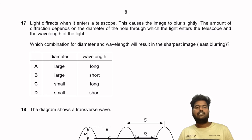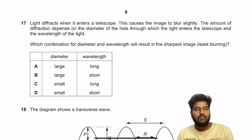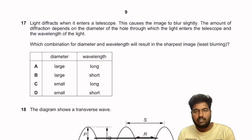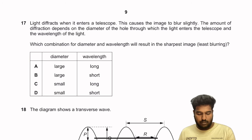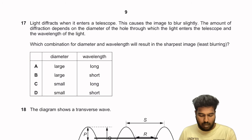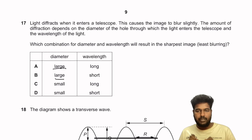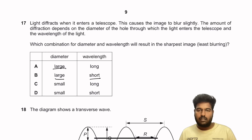Question 17: Light diffracts when it enters a telescope, causing slight blurring. The amount of diffraction depends on the diameter of the hole and the wavelength of the light. For the sharpest image with least blurring, the diameter should be large — a wider gap reduces diffraction — and the wavelength should be short. So option B is the right answer.